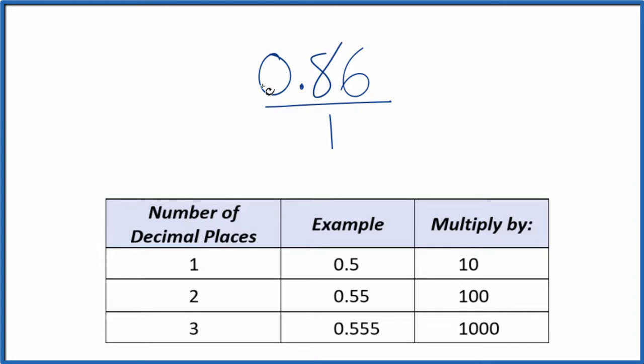What we need to do is get this 0.86 to be a whole number. And I can see there's one, two decimal places. Two decimal places, we're going to multiply by 100. That'll give us our whole number. So 100 times 0.86, that gives us 86. That's a whole number.